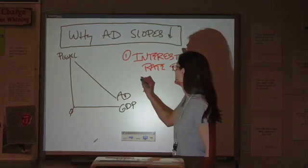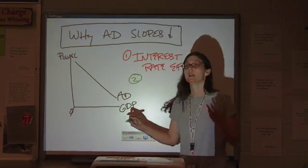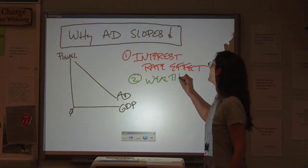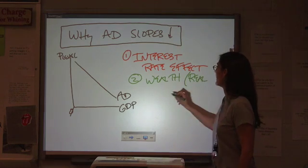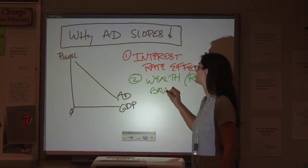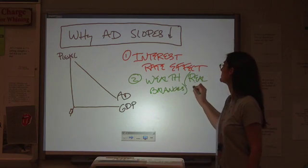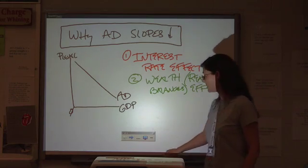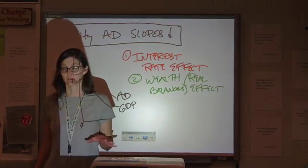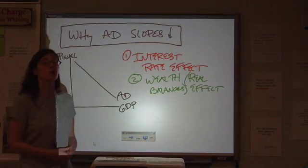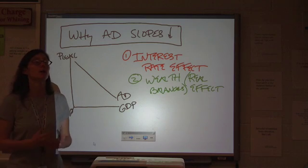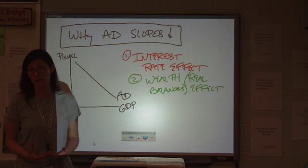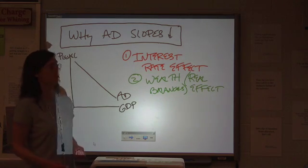The second one is the wealth or real balances effect. Now, wealth and income are not the same thing. Your income is money that you earn from working. Your wealth is everything that's accumulated in terms of value of all of your assets. So, we're talking about wealth, we're not talking about income.